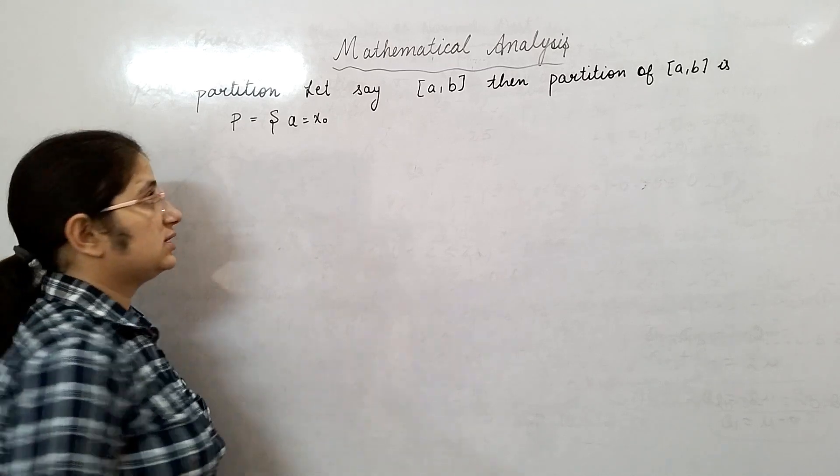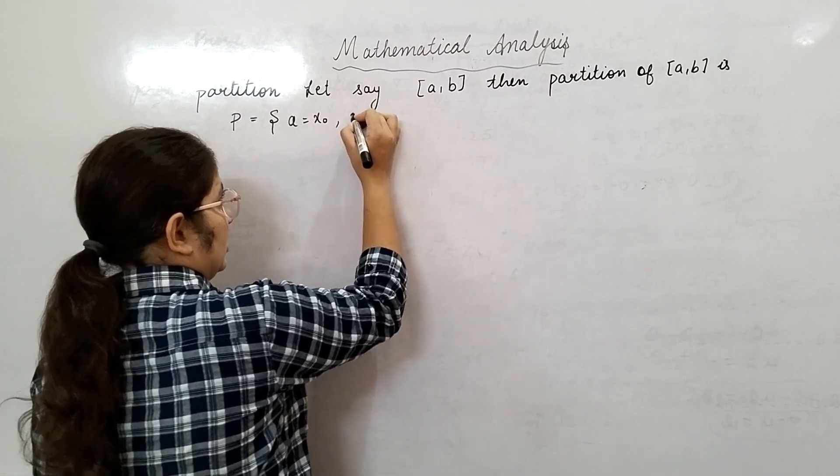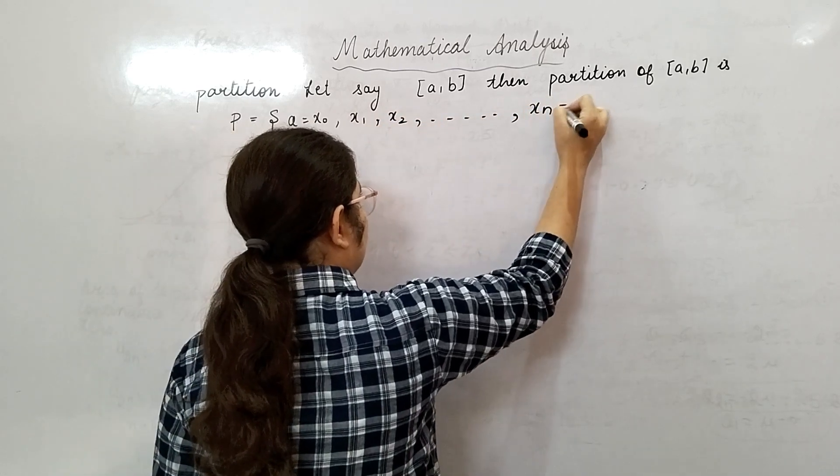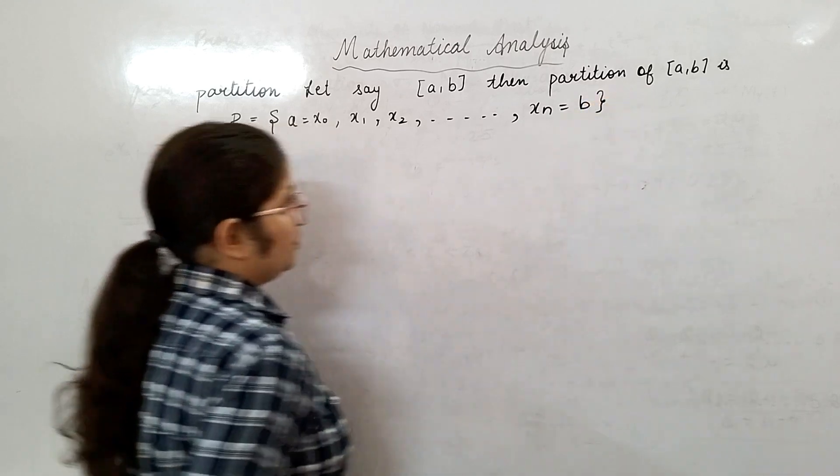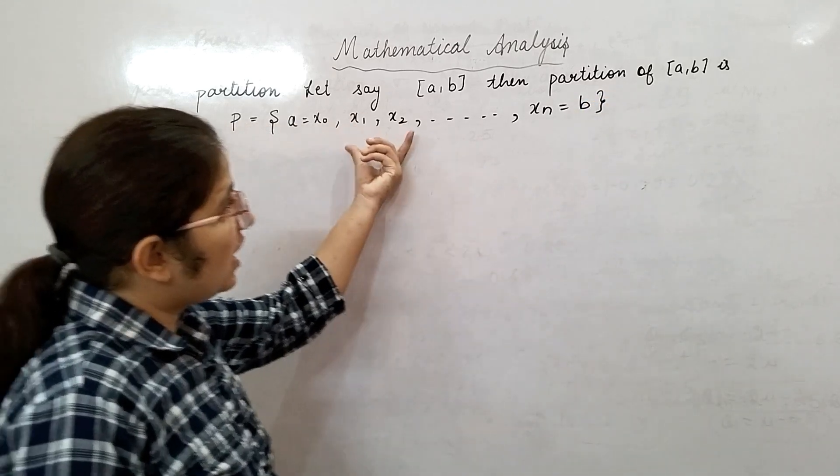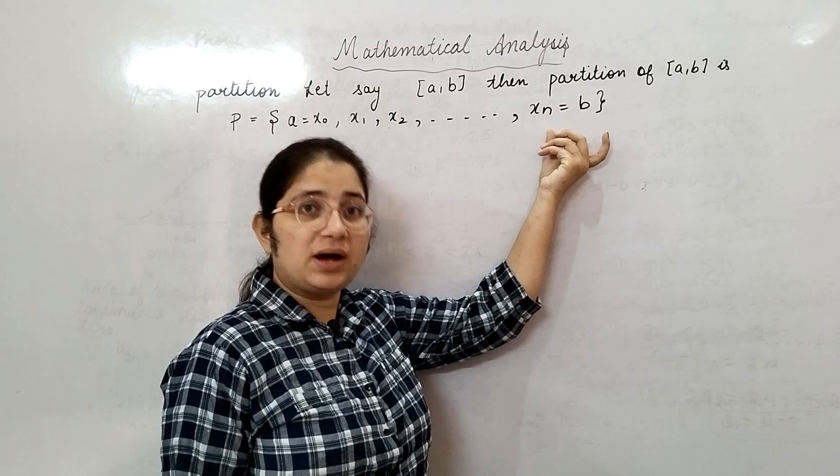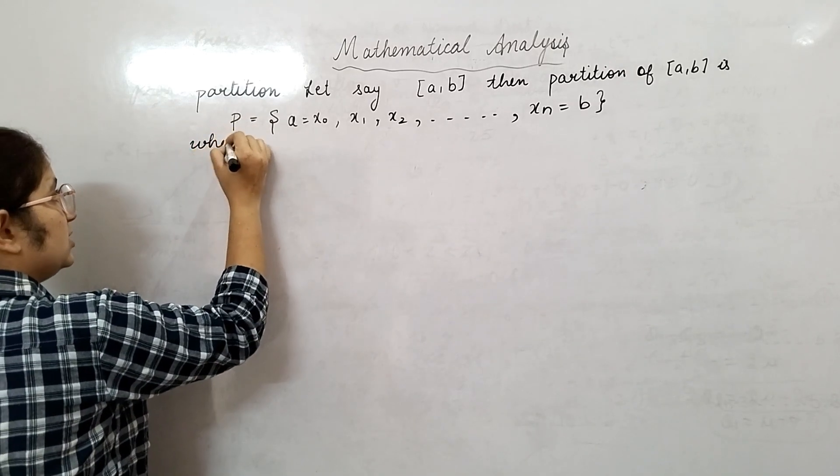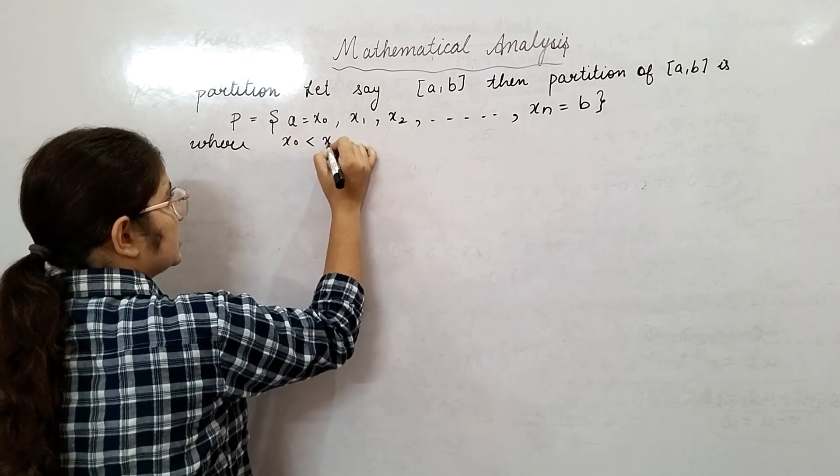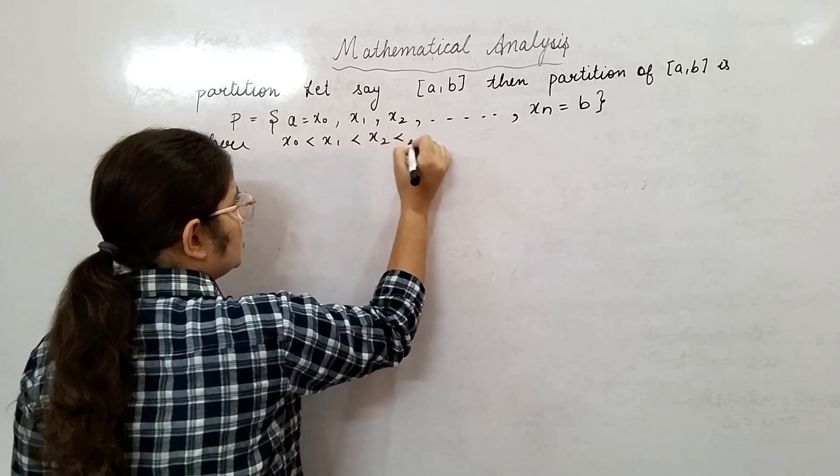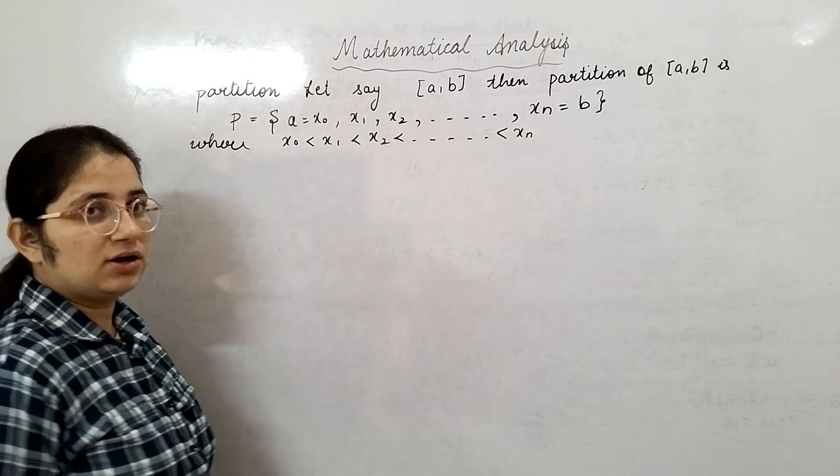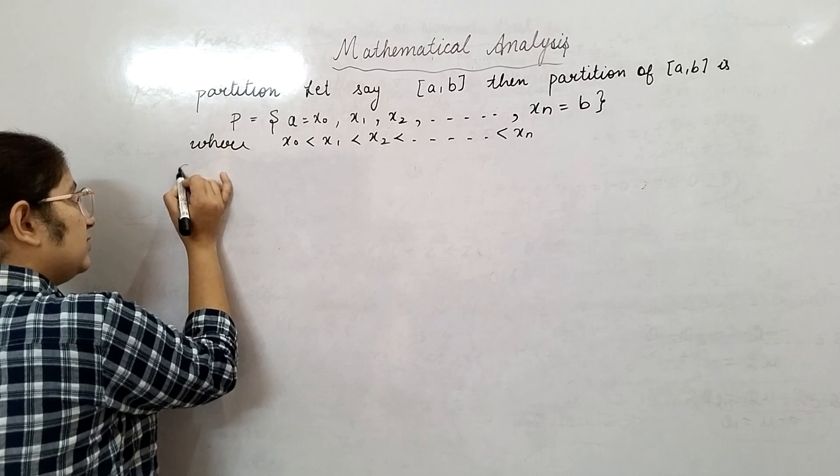The first point of the partition will be a, then x₁, then x₂, ..., xₙ, and the last point will be b. So in this way you will partition your interval, where the condition on these xᵢ's is: a < x₁ < x₂ < ... < xₙ < b. Now I will give you an example.